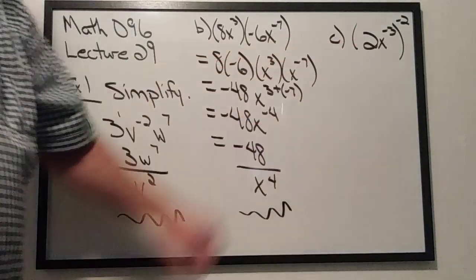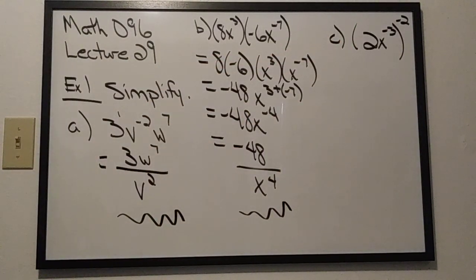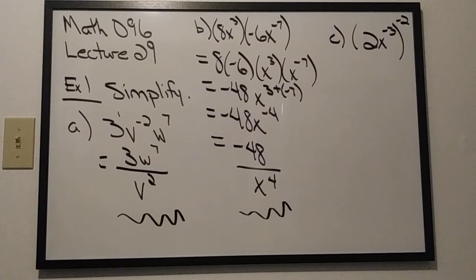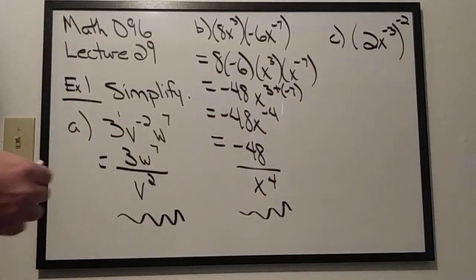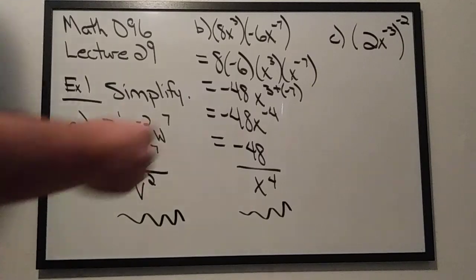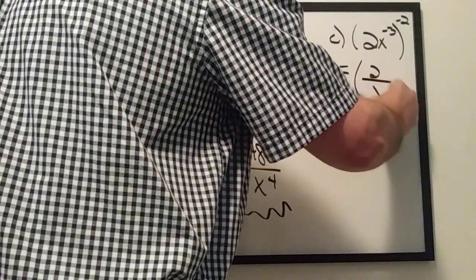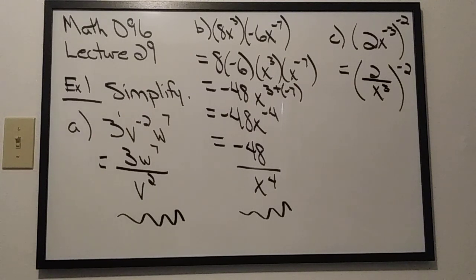The final answer is negative 48 divided by x to the fourth. Now let's check out Part C. As you look at Part C, there are multiple rules of exponents happening here. One suggestion: any time you have a set of parentheses, simplify the expression inside the parentheses first, then focus on what's happening outside. Inside the parentheses I have 2x to the negative third. The 2 stays in the numerator, and x to the negative third goes into the denominator — giving 2 divided by x to the third, all raised to the negative second power.